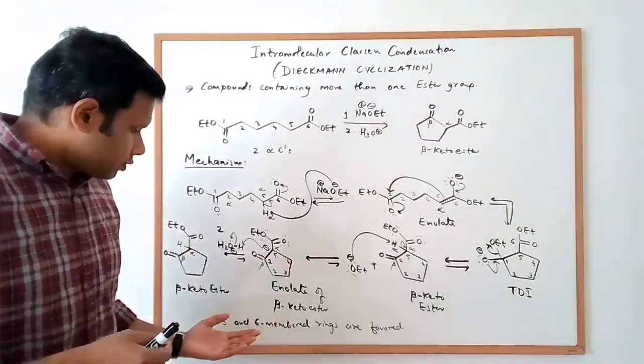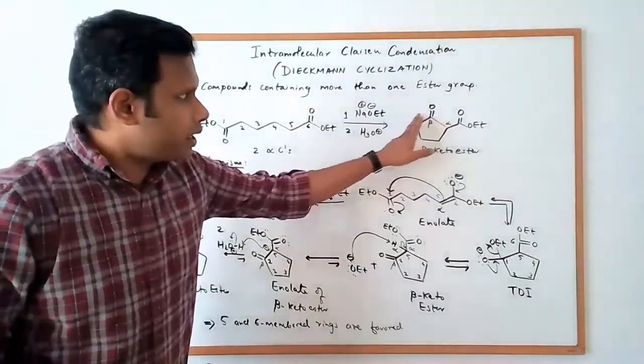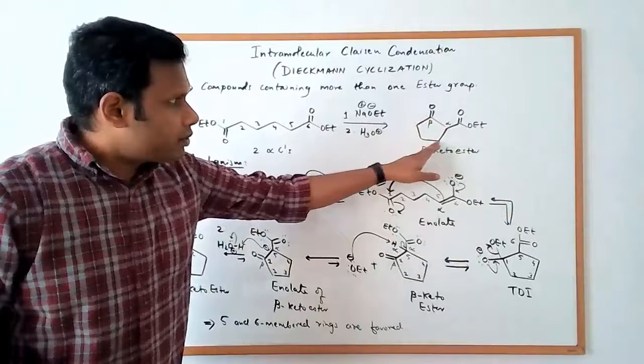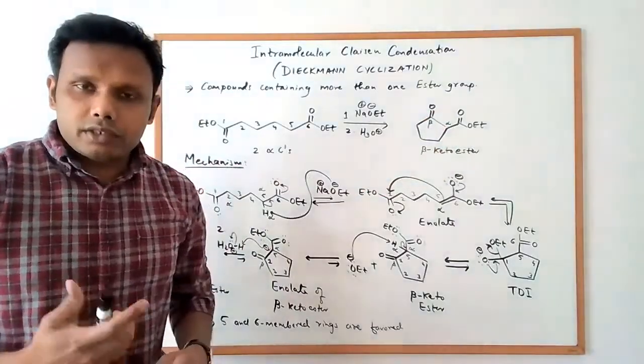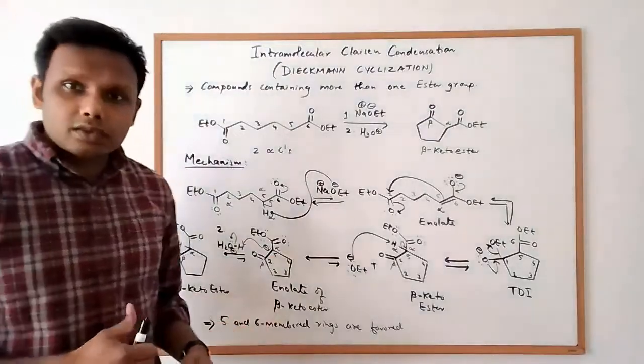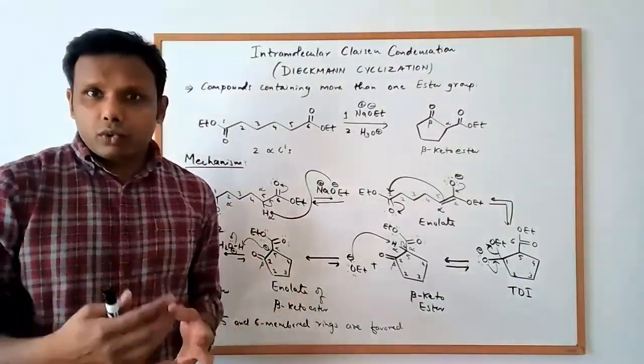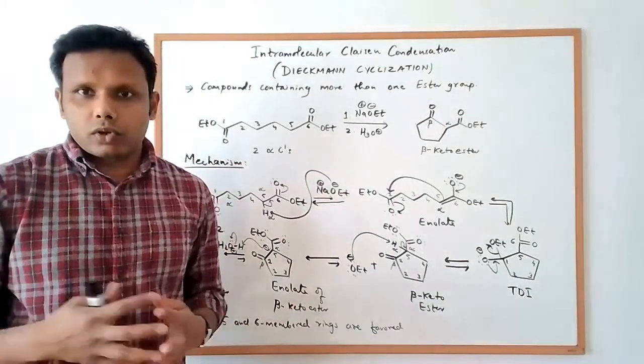And you have to look for how big would be the size of the ring here. So five-membered rings and six-membered rings are usually the preferred products from these reactions. That's one important thing to keep in mind as you explore this reaction and you try to work on some problems.